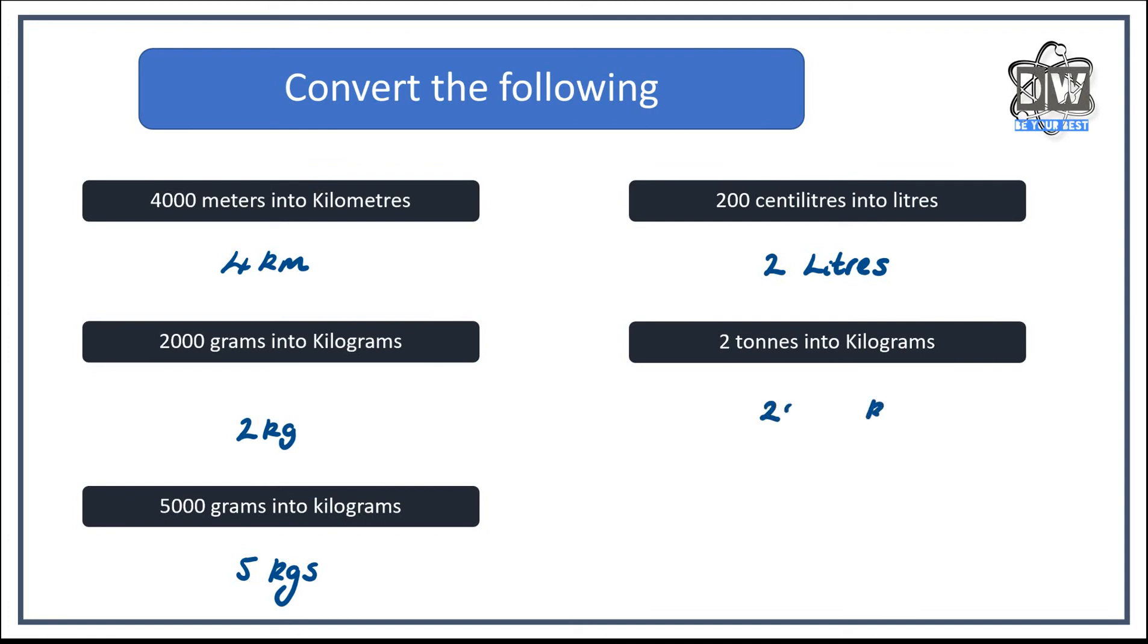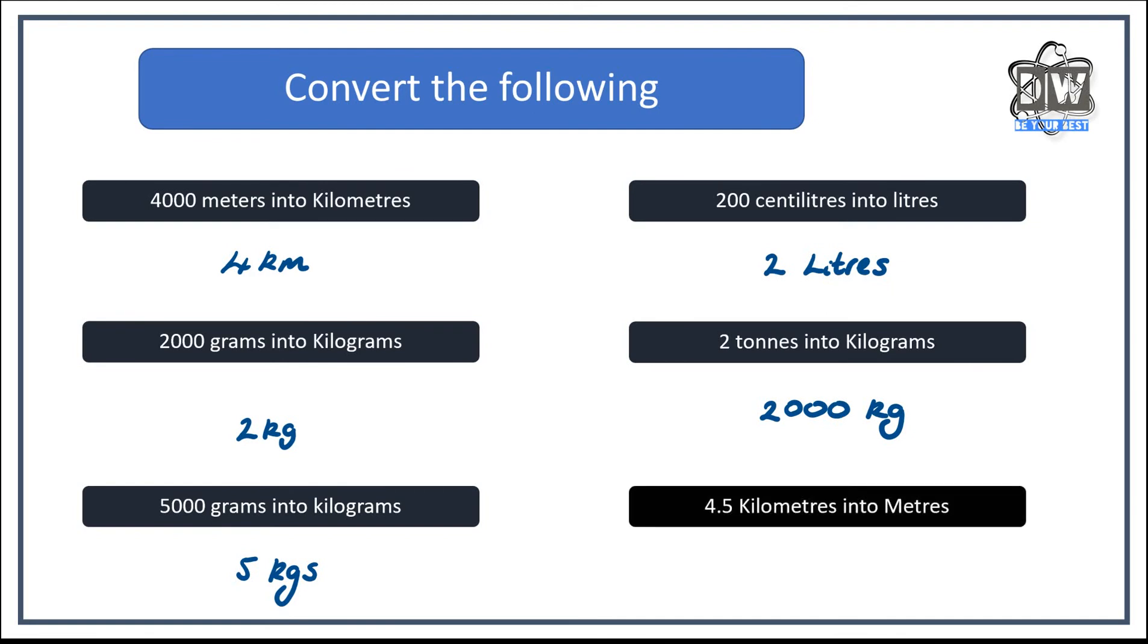So on this one, we would be timesing by a thousand to get us two thousand kilograms. And last but not least on this, what's 2.5 kilometers into meters? So are we timesing or dividing? And what are we timesing or dividing by? So on this occasion, we would be timesing by a thousand. So we'd end up with 2,500 meters.